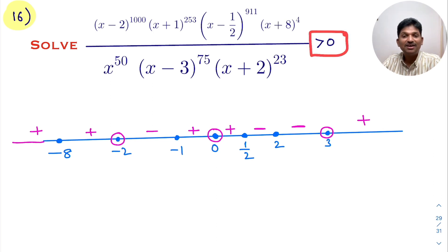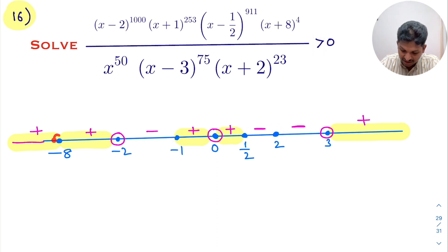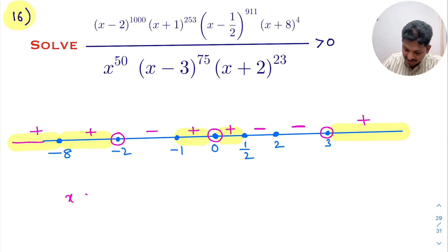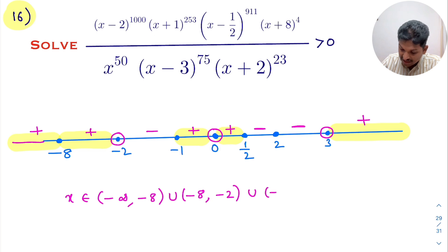We need greater than 0, so look for positive signs. Since it is strictly greater than, -1 and -8 are not part of the solution. The solution is x belongs to (-∞, -8) union (-8, -2) union (-1, 0) union (3, ∞).